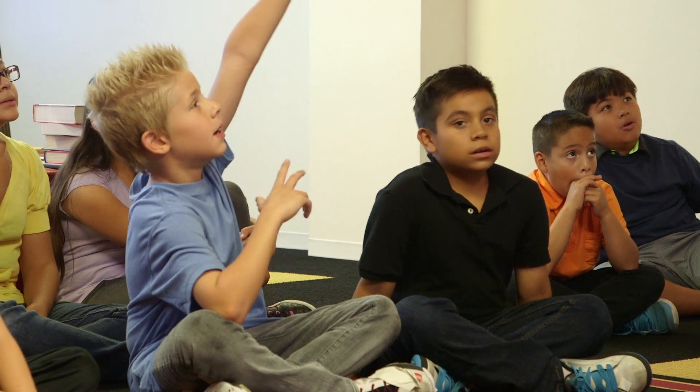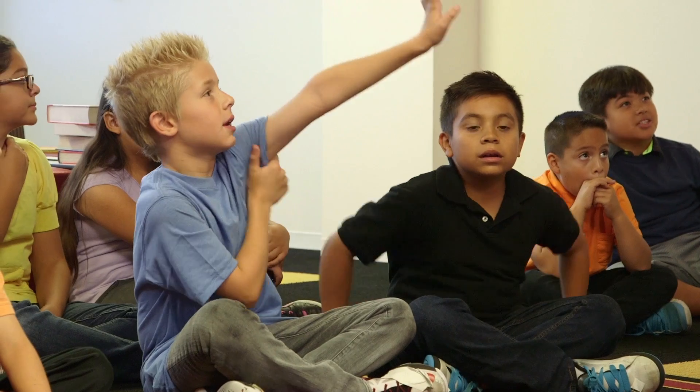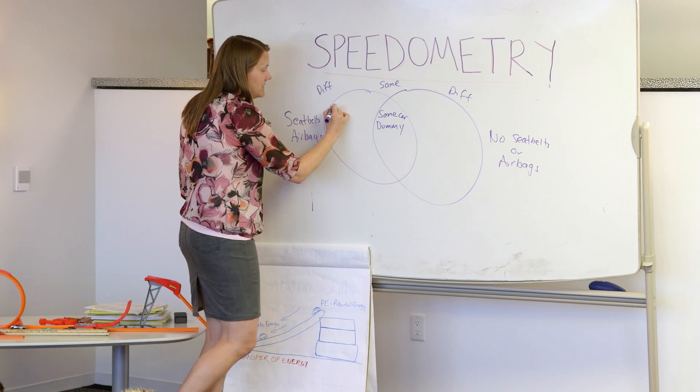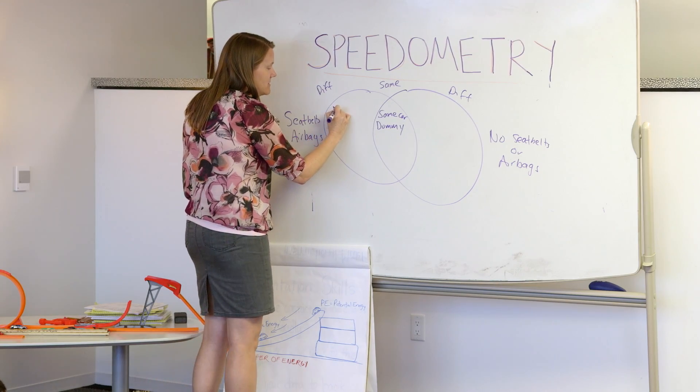The Explain phase is very important in helping kids make connections between the Explore and the scientific vocabulary. The fourth E is called Elaboration. This is a very important phase in teaching and learning.